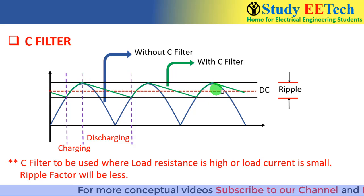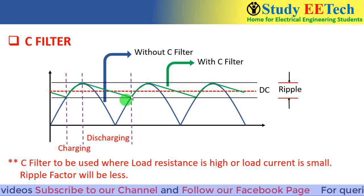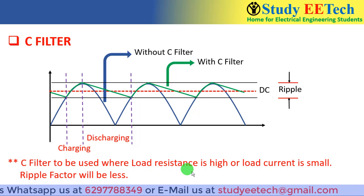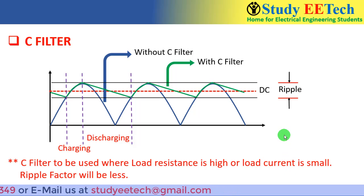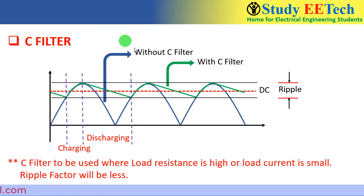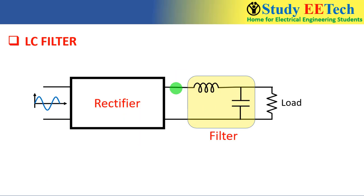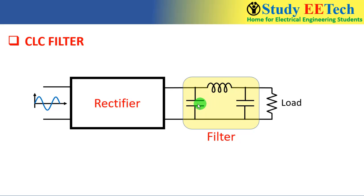There remains some ripple, but by adjusting the C value we can decrease it and get closer to the desired DC (the red line). The C filter should be used where load resistance is high or load current is small, with XC much less than load resistance, giving a low ripple factor. In reality, L alone or C alone cannot perform ideal filtering, so we combine them: the LC filter and the CLC (pi) filter — which uses two capacitors and an inductor — both give better filtering performance.